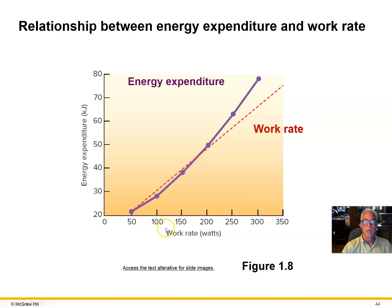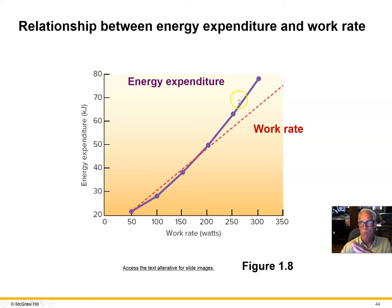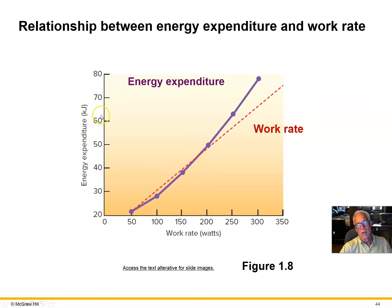Another way to look at this: as we increase work rate, what energy expenditure is required for each increment in work rate? It starts going up relatively linearly at first — every added unit of work rate adds a linearly equivalent amount of energy expenditure. But at some point, the energy expenditure starts to rise more steeply, meaning it takes a greater increase in energy expenditure for every unit increase in work rate.